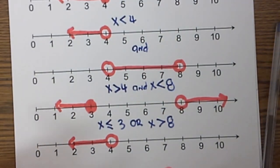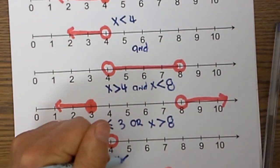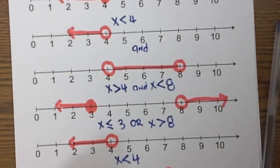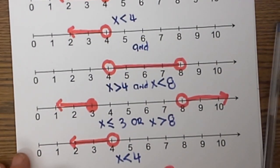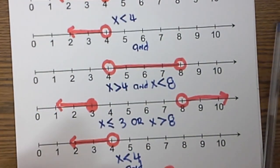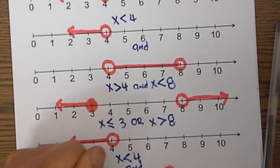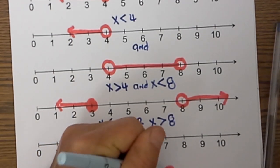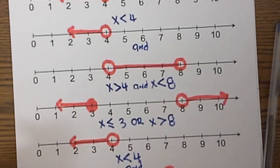Now let's move to two more examples. This one would be x is less than 4. This one is in between, so it would be an AND, so it would be closed, so it would be x is greater than or equal to 3 and x is less than 7.